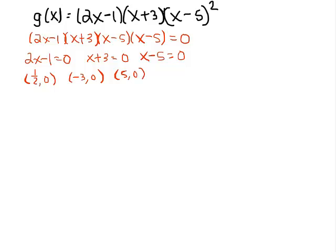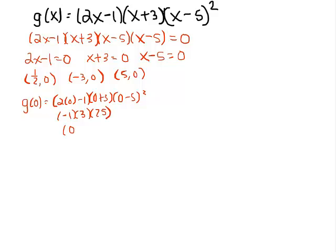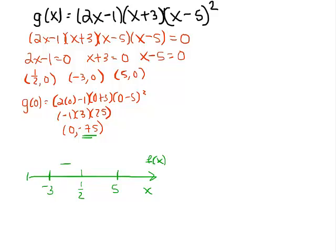What is the y-intercept? Let's find that. This is going to be negative 1 times 3 times 25, which gives me negative 75. So my y-intercept is 0 comma negative 75. Now let's make our f of x number line. I'm only putting three zeros on here even though one occurs twice — it's the same zero. In order from smallest to biggest: negative 3, 1 half, and 5. I can already place a sign because the y-intercept is negative, and that exists between negative 3 and 1 half.